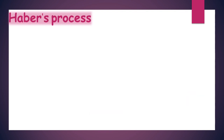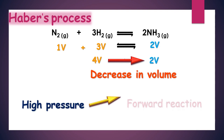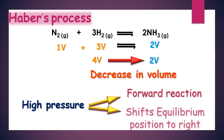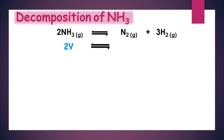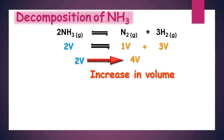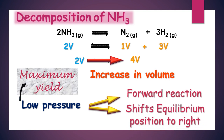Similarly, Haber's process also proceeds in the forward direction with the decrease in volume or increase in pressure. Thus, higher pressure favors the forward reaction and shifts the equilibrium position to the right to get the maximum yield. Now, let's see how the decomposition of ammonia is affected by change in pressure. According to the balanced chemical equation, 2 volumes of ammonia decompose to produce 4 volumes of product. Thus, the reaction proceeds in the forward direction with the increase in volume or decrease in pressure, so low pressure would favor the forward reaction and shift the equilibrium position to the right to get the maximum yield.